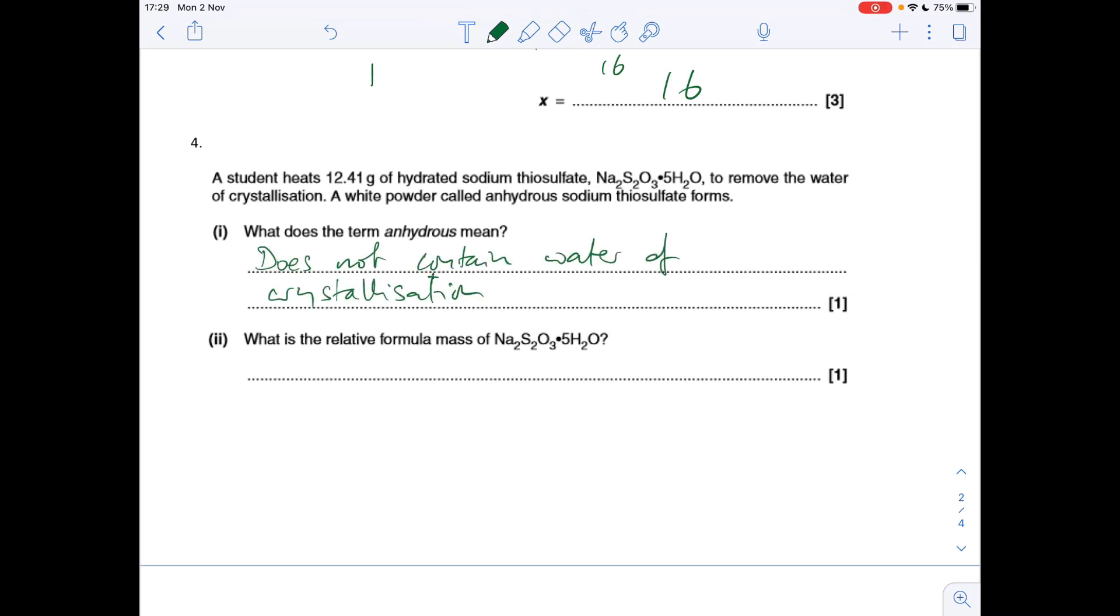The relative formula mass of this hydrated salt. So all we do is 2 sodiums, 2 sulfurs, 3 oxygens, and then to that we're going to add the mass of 5 waters. That comes out at 248.2.